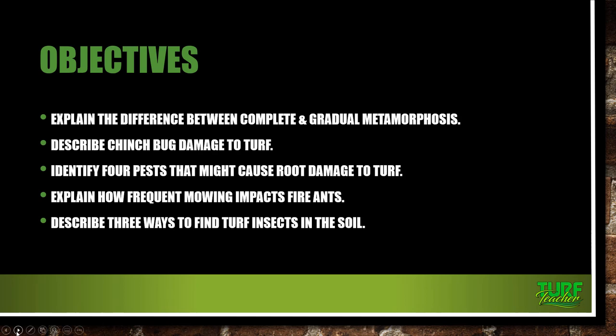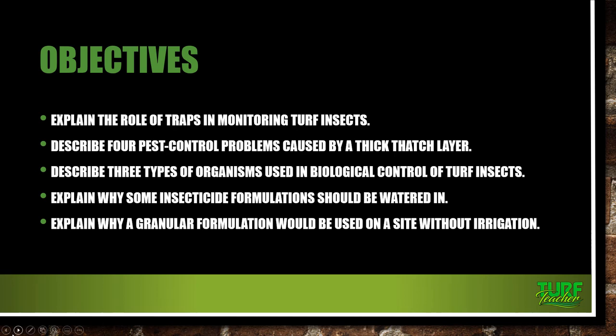Let's get started with our course objectives. We're going to explain the difference between complete and gradual metamorphosis, describe chinch bug damage to turf, identify four pests that might cause root damage to turf, explain how frequent mowing impacts fire ants, describe three ways to find turf insects in the soil, explain the role of traps in monitoring turf insects, describe four pest control problems caused by a thick thatch layer, describe three types of organisms used in biological control of turf insects, explain why some insecticide formulations should be watered in, and explain why a granular formulation would be used on a site without irrigation.